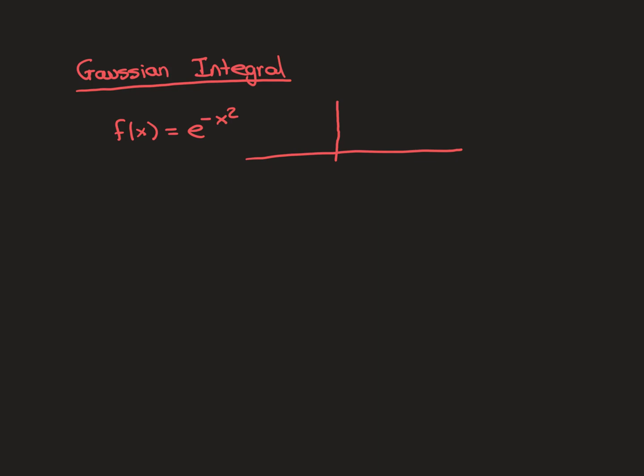It's not standardised — it needs a constant out the front, and then it will be one of the normal distributions. There are loads of different normal distributions; you can change the mu and the sigma parameter. If you want the PDF of a normal random variable, let's say x is normally distributed with mean mu and variance sigma squared.